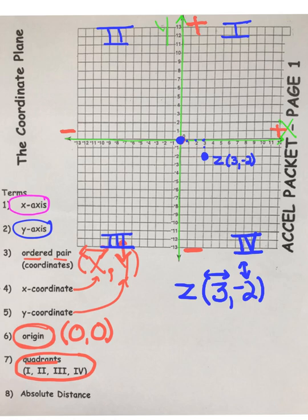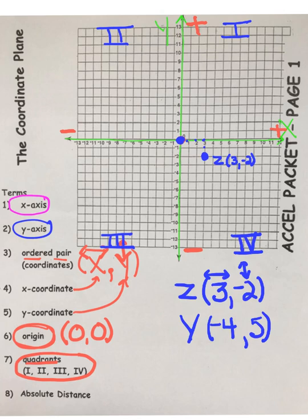Let's go with capital Y, point Y. We're going to move negative four to the left, but then we're going to go up five. Once again, place your pencil point at the origin and move to the left, negative four — one, two, three, four. Now our second number in the ordered pair is a positive five, so go up five — one, two, three, four, five. Put a nice solid dot to represent that location on the coordinate plane, and right next to that dot, label it with the letter Y and label the ordered pair next to the letter.